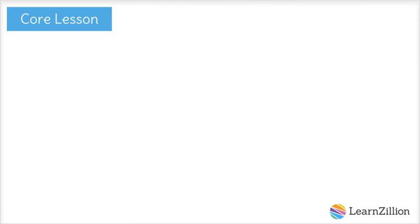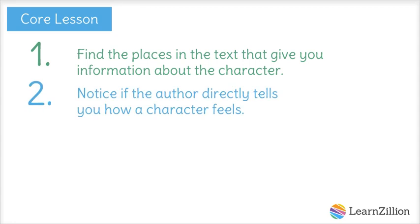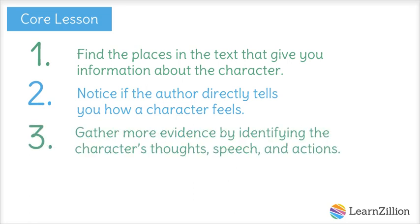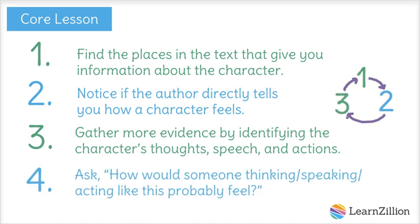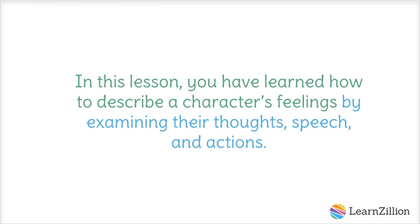In this lesson we followed four steps. First, we found the places in the text that give you information about the character. Then, we noticed if the author directly tells us how a character feels. Third, we gathered more evidence by identifying the character's thoughts, speech, and actions, and continued steps one through three until we found a bunch of evidence. Finally, we asked, how would someone thinking, speaking, and acting like this probably feel? In this lesson, you have learned how to describe a character's feelings by examining their thoughts, speech, and actions.